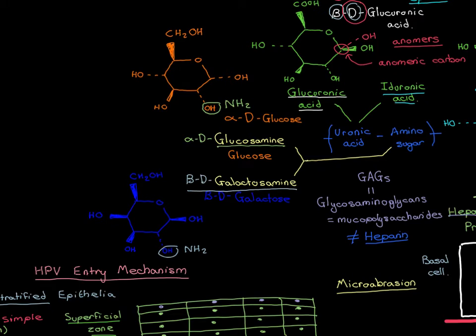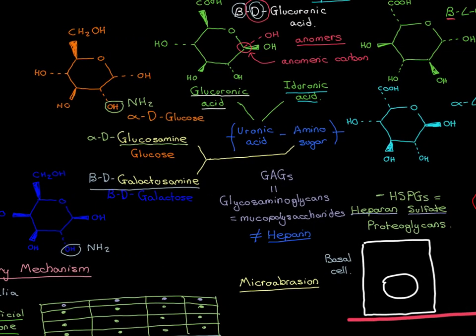These two molecules — glucosamine and galactosamine — are the two molecules that can occupy the amino sugar position, glycosidically linked to the uronic acid sugar. We've now seen the four different monosaccharides used to build these disaccharides from which glycosaminoglycans are constructed. The next thing to understand is that these monosaccharides in the glycosaminoglycan can have modifications added onto them.